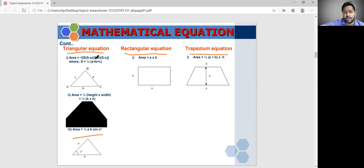So, if you want to find the triangulation root of s into s minus a into s minus b into s minus c. Or we can find where s equal to half of a plus b plus c. Rectangular a into b. And if you want to find the trapezoid equation, half into a plus b into h will give you the trapezoidal area.